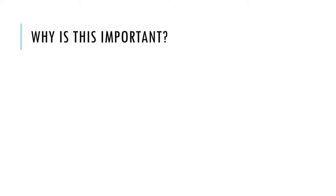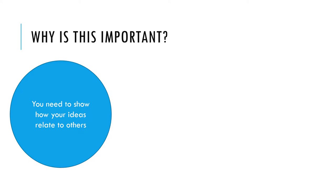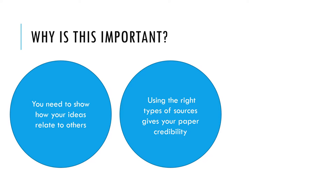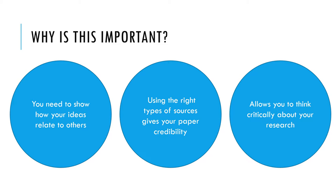Why is this so important? First and foremost, when you're writing a research paper it's important to not just make statements but to show how your ideas relate to others. Using the right types of sources allows you to borrow the credibility of the author and make your paper stronger. Finally, using good sources of information allows you to think critically about your research.